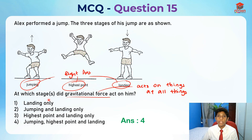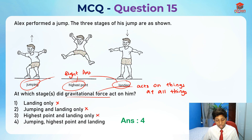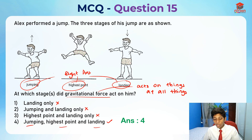Which option has all three of these? The first option is wrong — it says landing only. The second option says jumping and landing. The third option says highest point and landing only. So the last option is right, as it says jumping, highest point and landing. All three stages — gravitational force acts on him at all three stages.